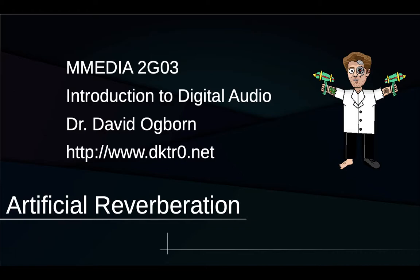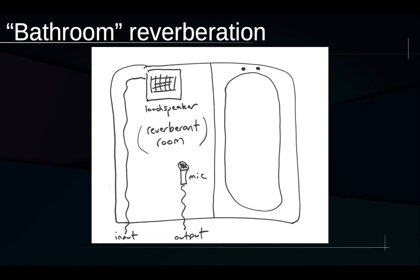Starting with some historically significant ways that reverb was simulated and proceeding to discuss the most likely ways that we're probably going to simulate reverb nowadays using software. One of the earliest methods of simulating reverb using audio technology involves taking a reverberant room and injecting sound into it, putting a microphone in that same room and re-recording the sound. Basically we're using the real reverberation of the space and capturing it.